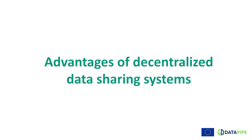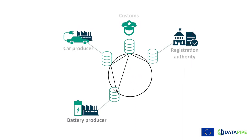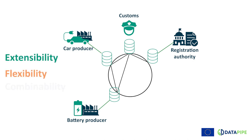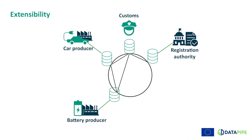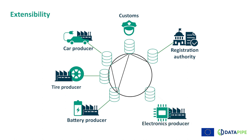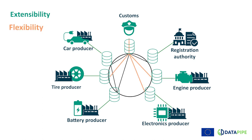While decentralized data sharing systems may require additional effort when being set up, they offer important advantages such as extensibility, flexibility, and combinability. Extensibility means that new data sources can be added to the system easily — for example, a tyre DPP, an electronic systems DPP, or an engine DPP. Flexibility means that Customs enquiries can be easily extended to exploit these new data sources. Combinability means that manufacturers of complex products can combine data from different suppliers into their DPP.